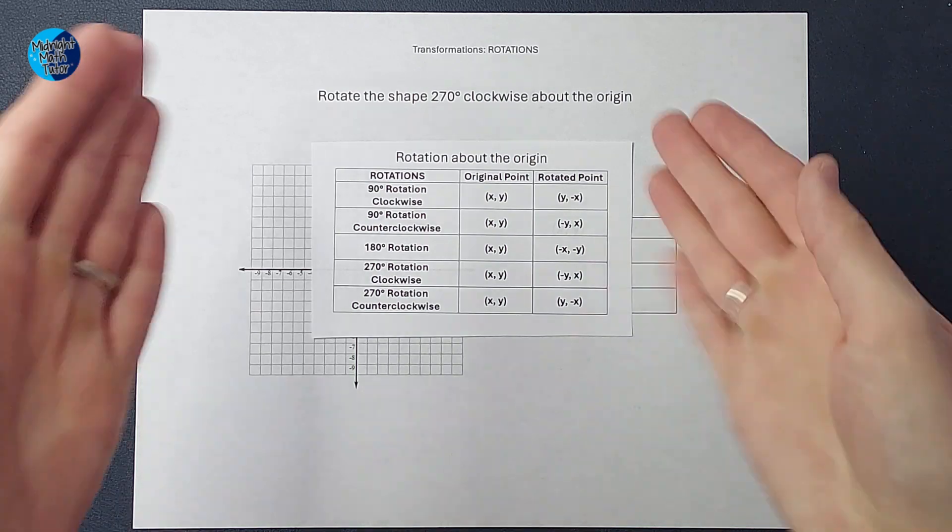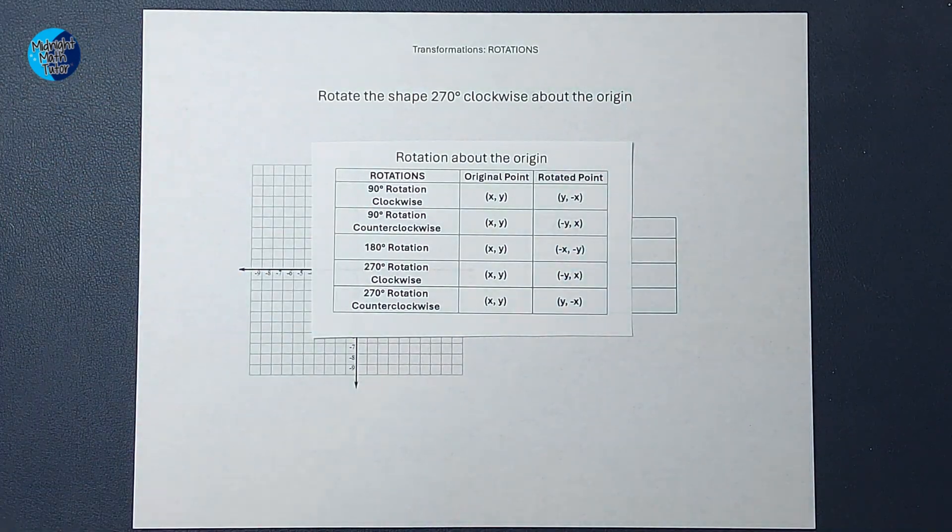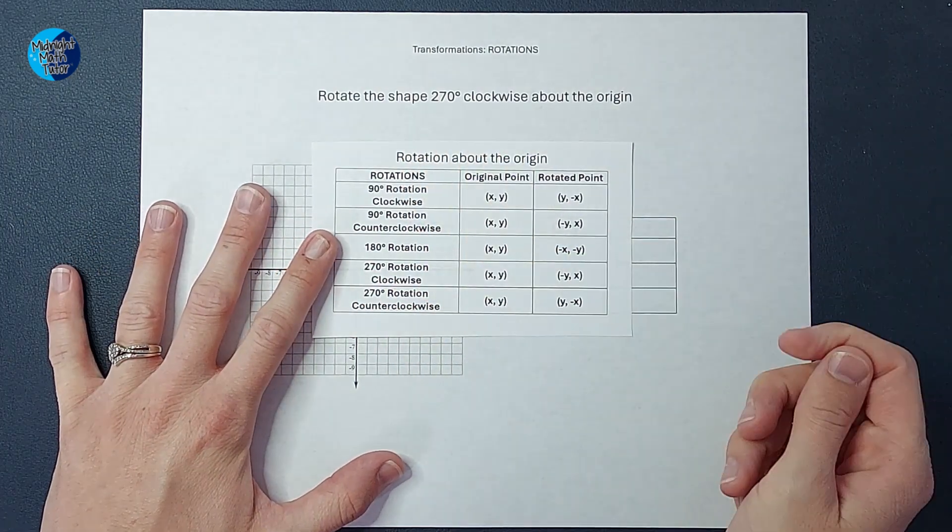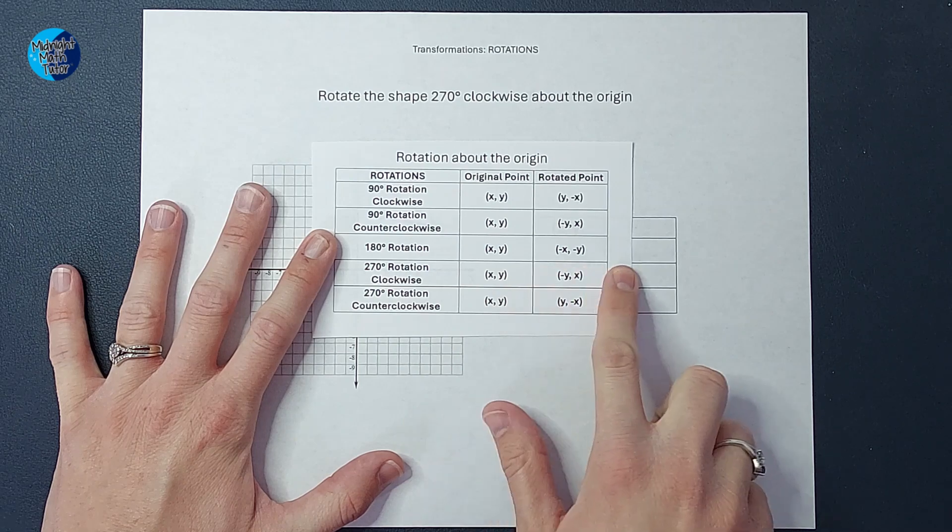Because I don't love just to be like, do this, trust me. But if you want to check that out, you can. But I'm going to look here, 270 degrees clockwise about the origin is right here on my table.